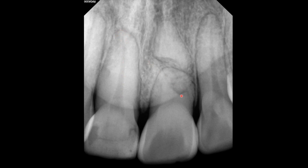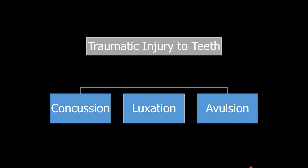Let's review what we learned earlier about traumatic injury to teeth. The injury to teeth may be three types: concussion, luxation, and avulsion.